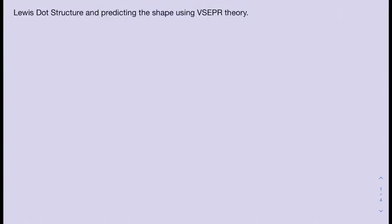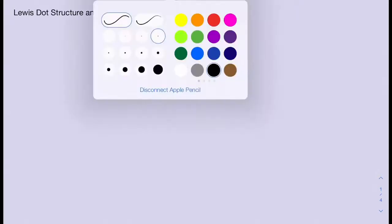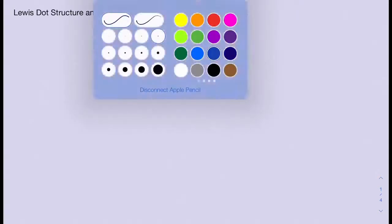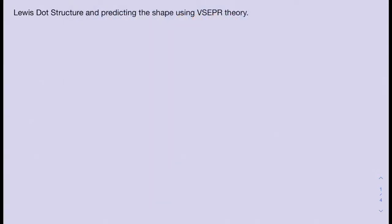In this video we're going to talk about some examples of Lewis structure drawings and how we're going to be using the VSEPR theory to determine the shape of these Lewis structures. Let me give you an example.